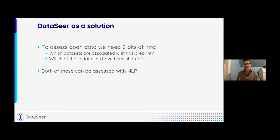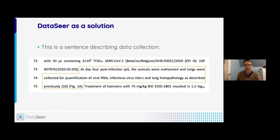And so to assess open data for a particular bit of research text, let's say we're focusing on an article, we need to ask first which datasets are associated with this preprint, with this article, and which of those datasets have been shared. And both of these can be easily assessed with natural language processing.